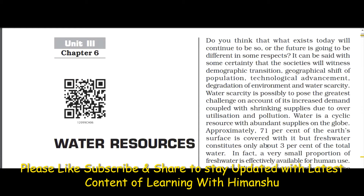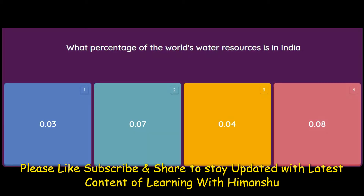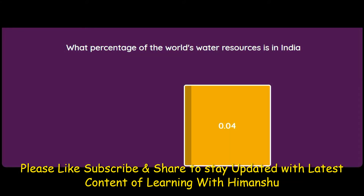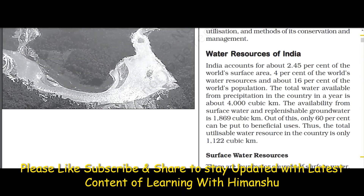Approximately 71 percent of the earth's surface is covered with water, but fresh water constitutes only about 3 percent of the total water. What percentage of the world's water resources is in India — 3 percent, 7 percent, 4 percent, or 8 percent? The answer is 4 percent.